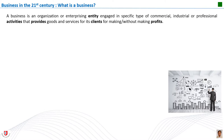A business is an organization or enterprising entity engaged in commercial, industrial, or professional activities. A business can be a for-profit entity such as a publicly traded corporation, or a non-profit organization engaged in business activities such as an agricultural cooperative. Business includes everything from a small owner-operated company such as a family restaurant to a multinational conglomerate such as General Electric. To do business with another company, a business must engage in some kind of transaction or exchange of value. In this sense, the word business can refer to a specific industry or activity, such as the real estate business or the advertising business.